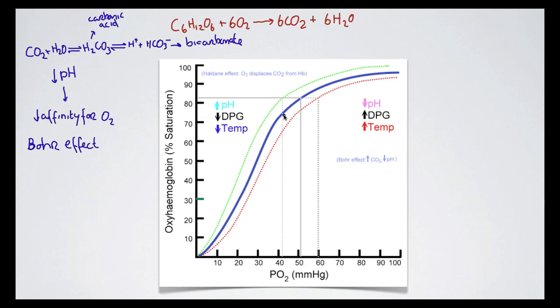However, because we have this Bohr effect and it shifts to the right at that same partial pressure of oxygen, we have a percent saturation of approximately 63-64. So we get a 10% reduction by changing the pH by a certain amount. So we reduce the pH, affinity for oxygen goes down and that is called the Bohr effect.